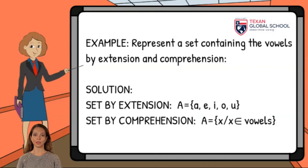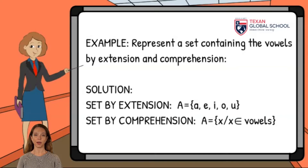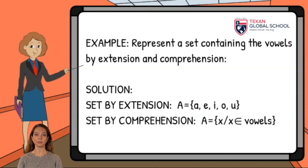In the set by comprehension, we observe that the common characteristic is that the elements must be vowels. Therefore, the set A can be represented as all the elements of X, such that X belongs to the vowels.